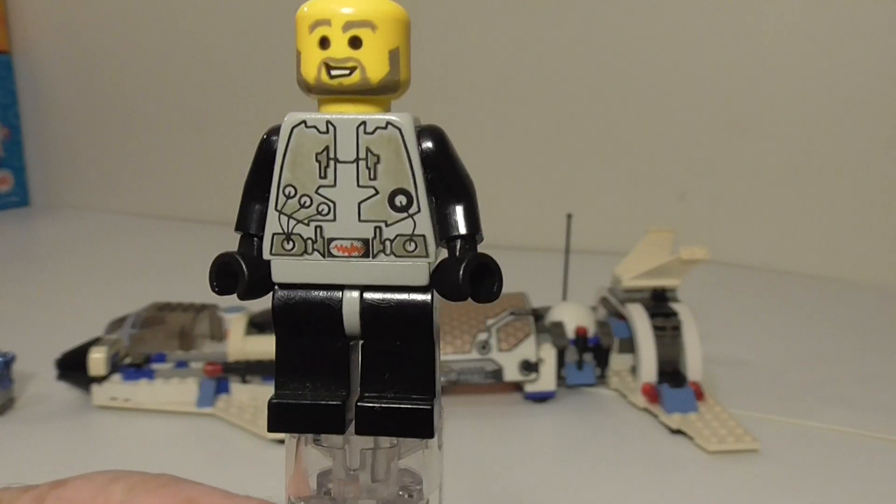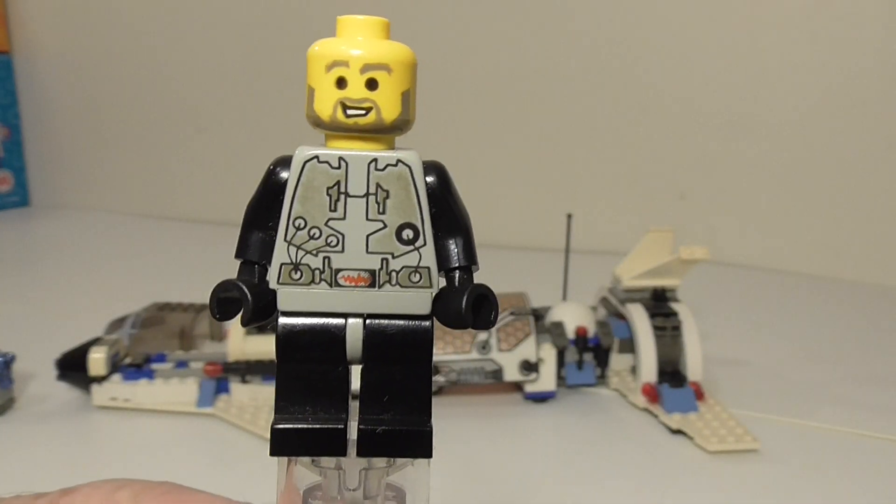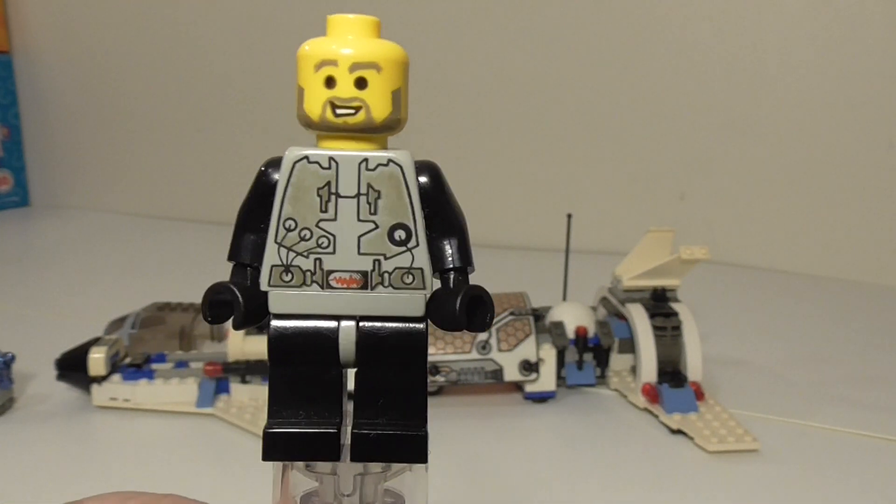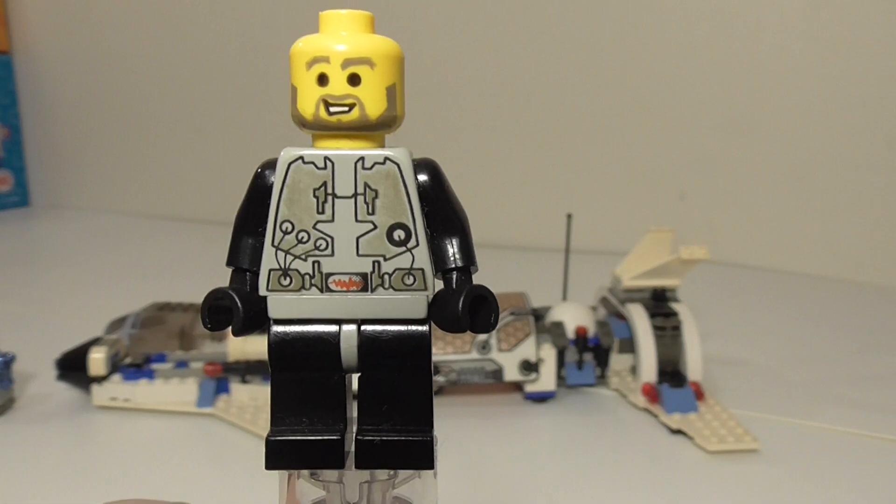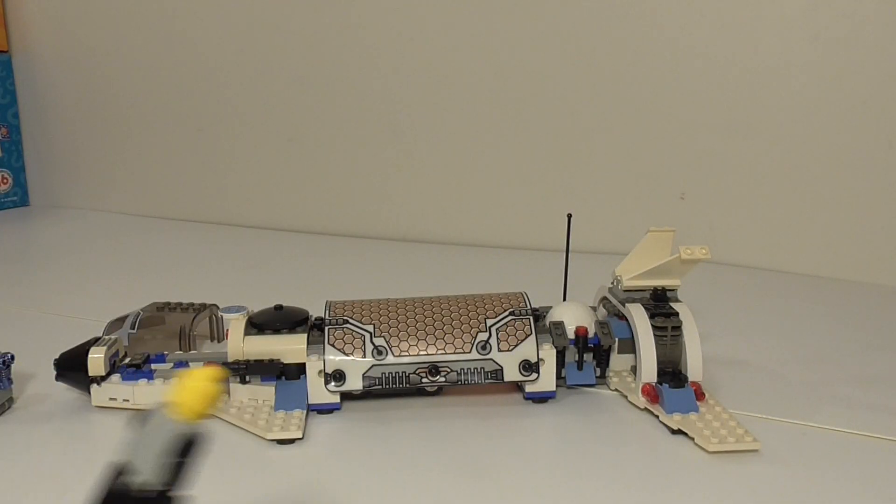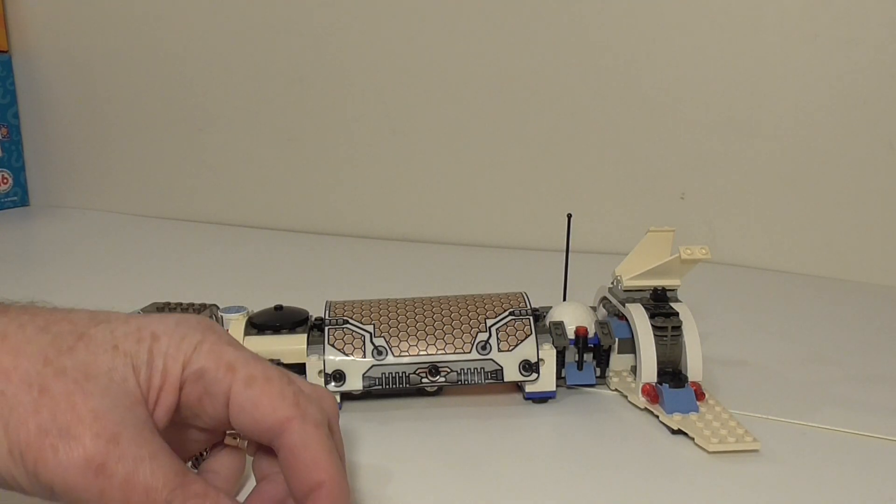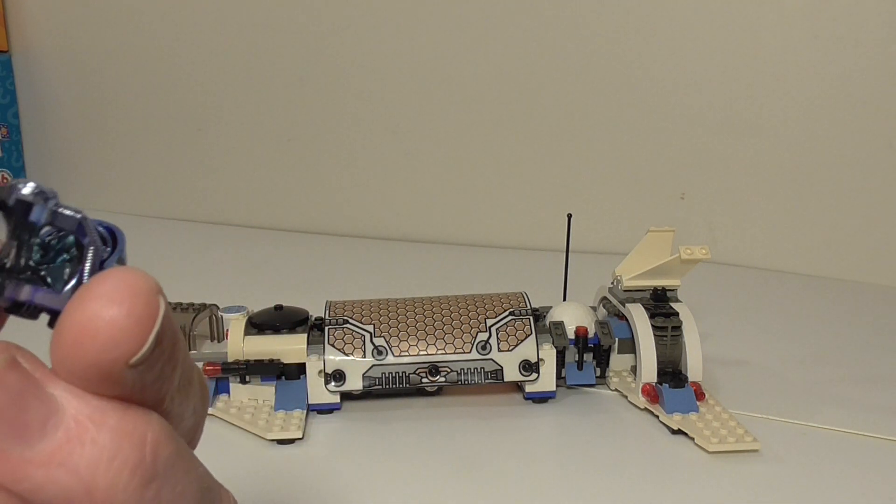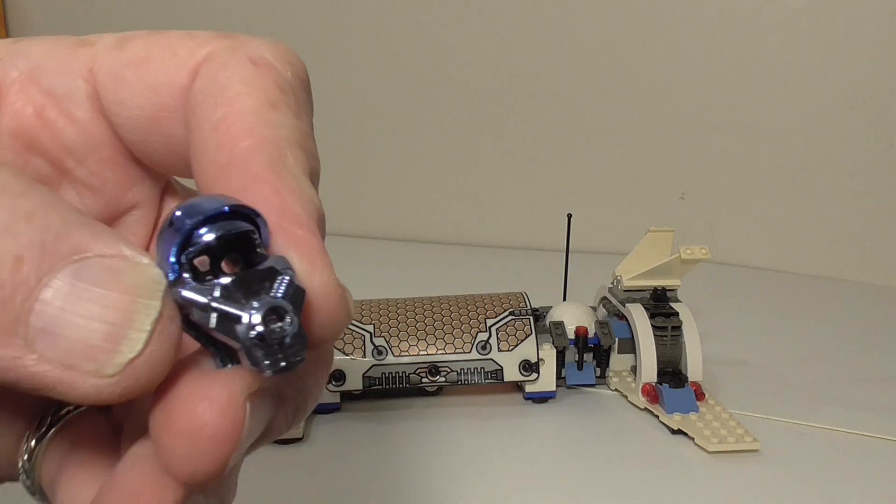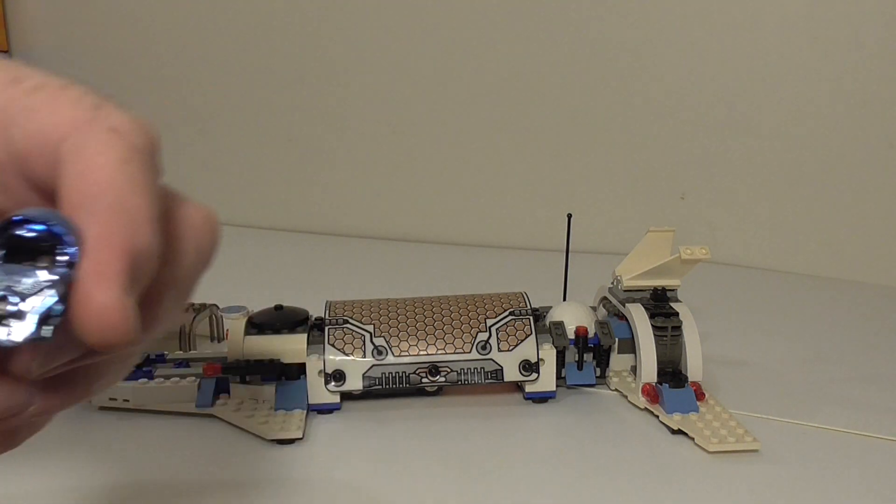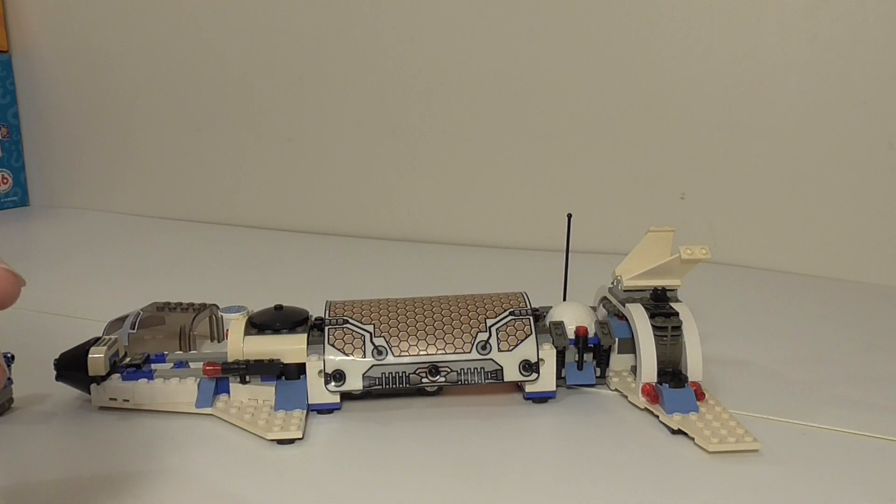And here's our minifig, his name is Mac. Very cool, nothing on the back. It's a little bit hard to do this but see the beauty of this chrome piece, blue chrome, it's just fantastic.